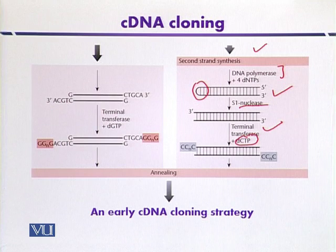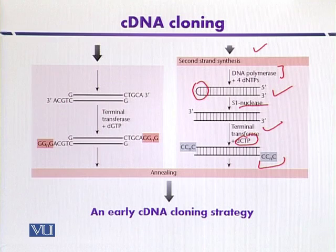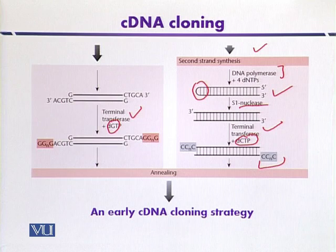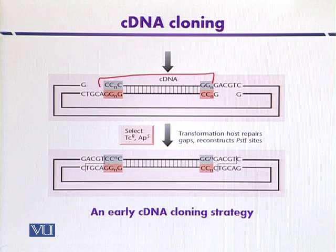After S1 nuclease treatment, the cDNA is treated with terminal transferase in the presence of cytosine residues. Terminal transferase has the ability to add a single type of nucleotide — here, cytosine residues are added at one end of the cDNA. The vector is also digested with PstI and treated with terminal transferase in the presence of guanine residues, which are complementary to cytosine. Guanine residues are thus added to the vector DNA, and the cDNA is then ligated with the vector DNA.